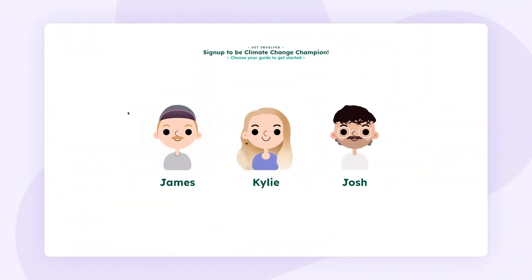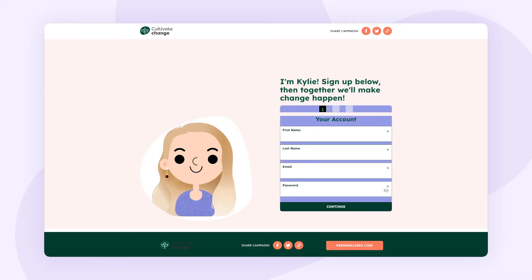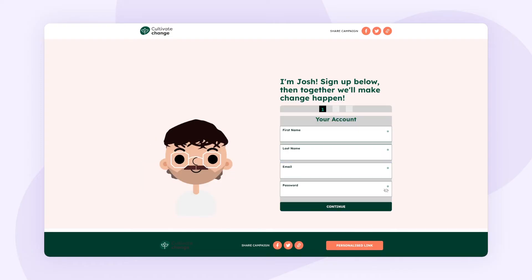The next example is where the fundraiser chooses a personalized guide that will then theme their experience. This example relates to any time you want the user to pre-select an option before sign up that then changes their visual experience of the campaign. As you can see, I've created three guides for this campaign — James, Kylie, and Josh. When the user selects their option, it will theme their sign up experience and any other campaign experience you wish, such as their profile page or dashboard.